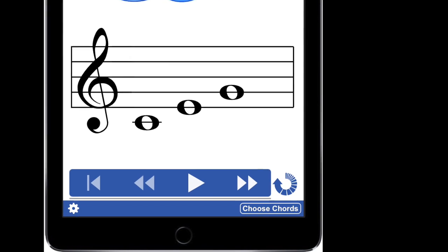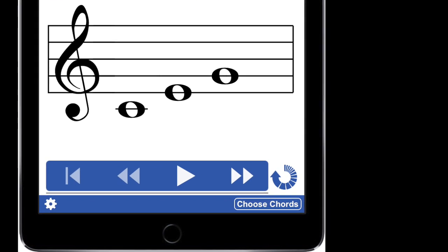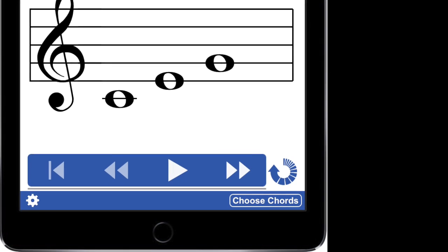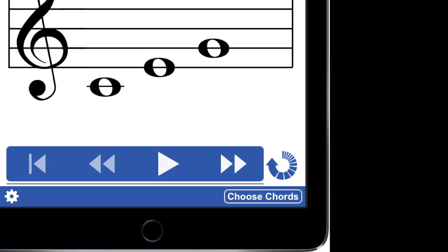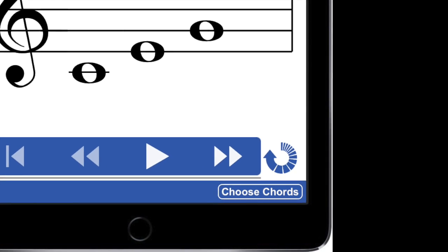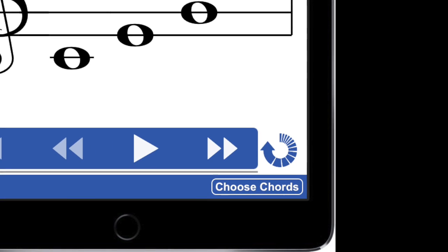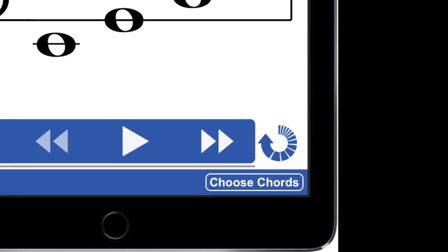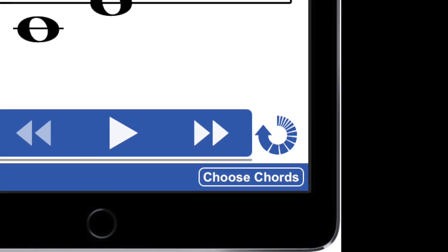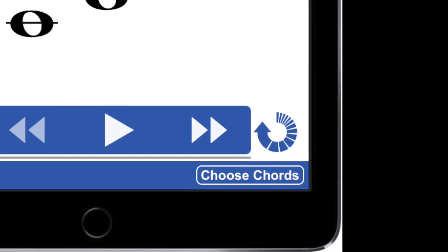So one of the first things you want to do when you enter this page is you want to go to the button on the right, which is labeled Choose Your Chords, and select which chords you want to have played inside the progression. So let's take a look at Choose Your Chords first.